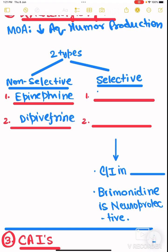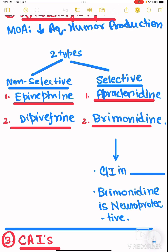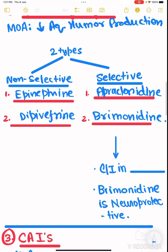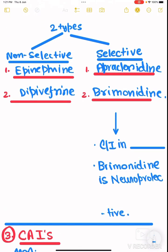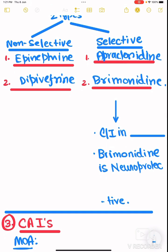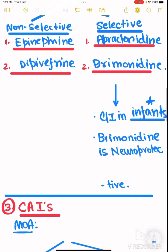The selective alpha agonist example is apraclonidine. The selective alpha agonist is contraindicated in infants. Also, brimonidine is neuroprotective — this is very important.